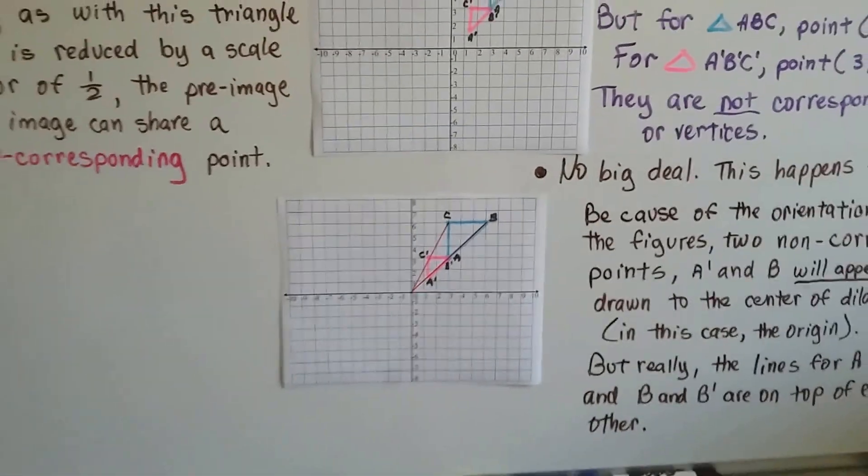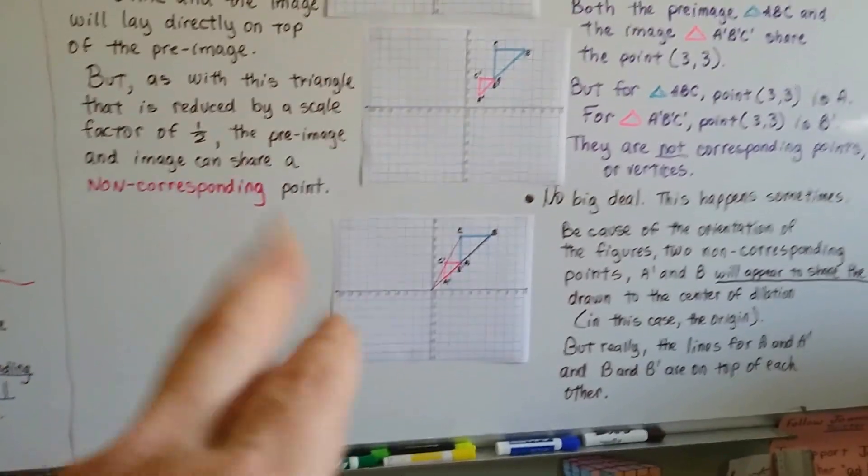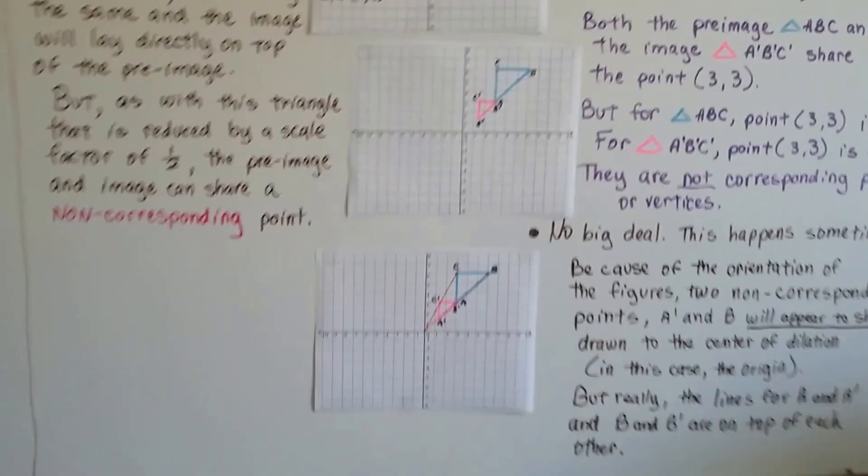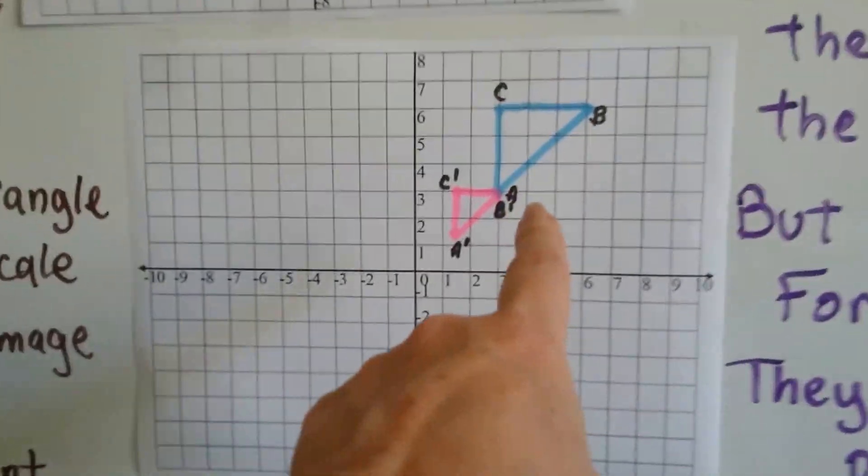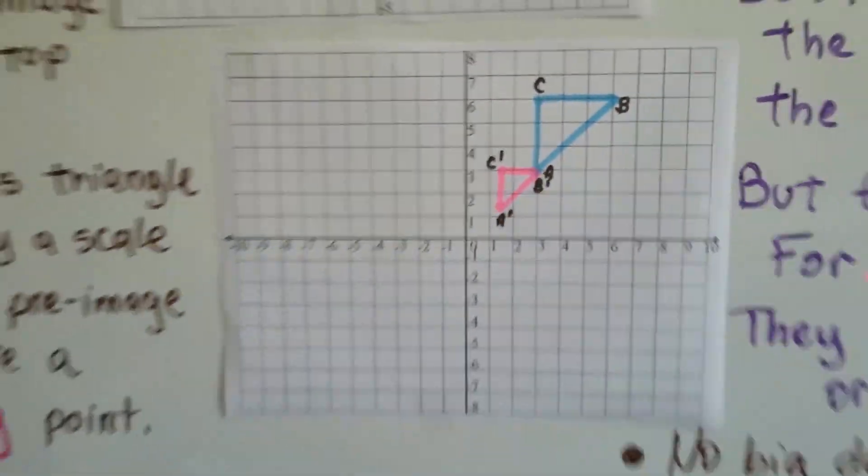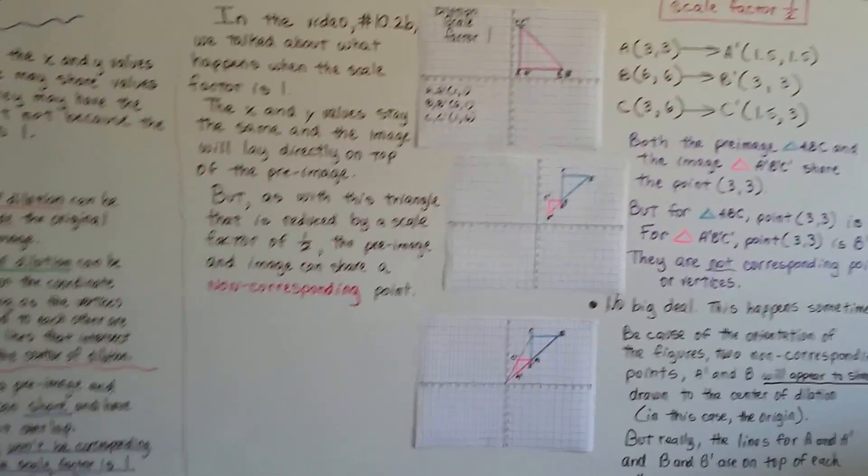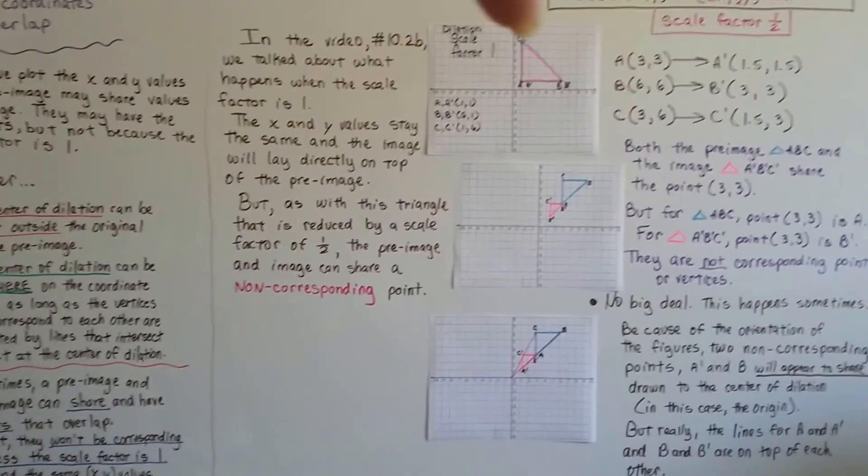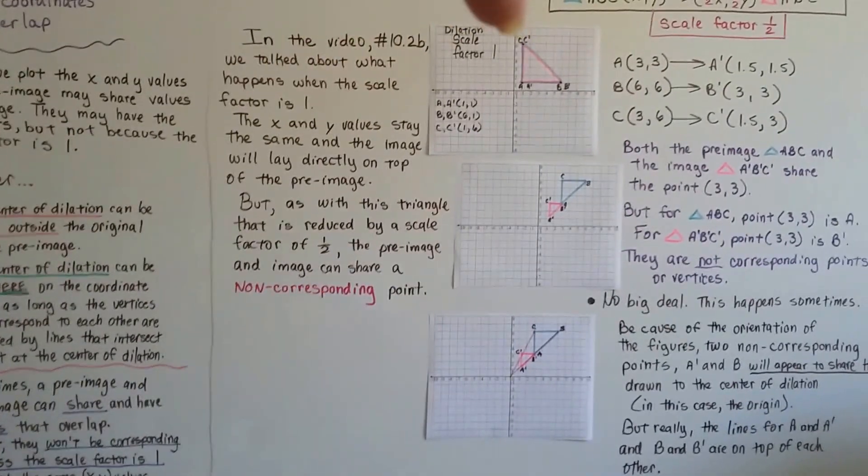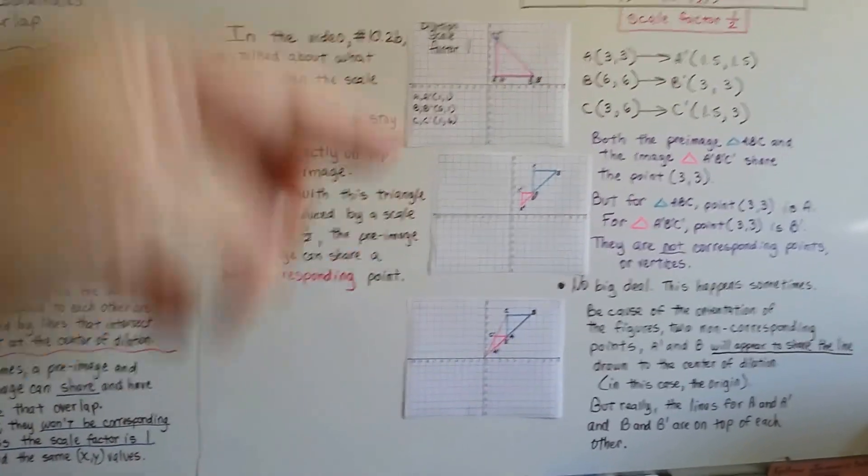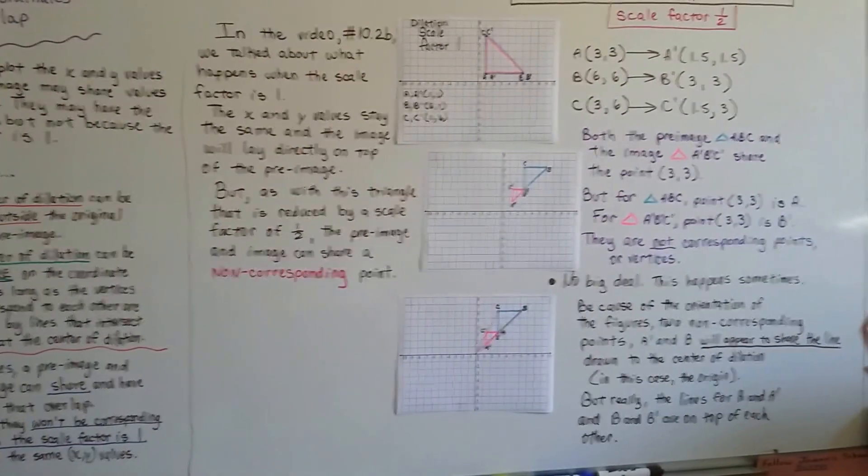I wanted to show you this. It's no big deal. You can have non-corresponding points share the same point, like in this case the A and the B'. We just multiplied it by a half and that's what happened. Remember that if the scale factor is 1, it's gonna lay on top of each other and they'll share points, but this can happen and it's no big deal.